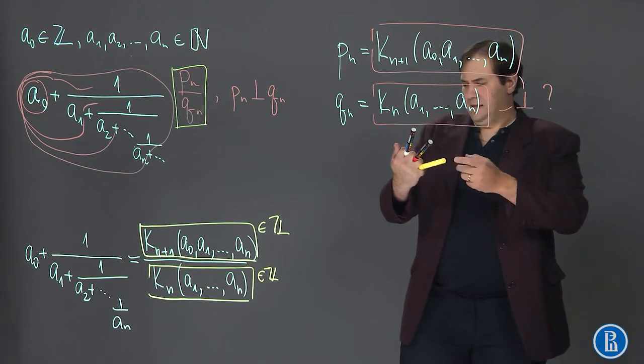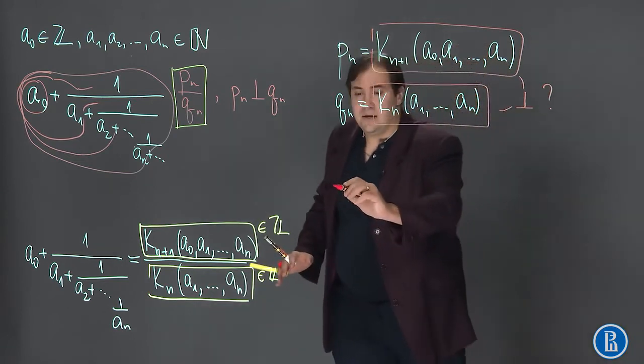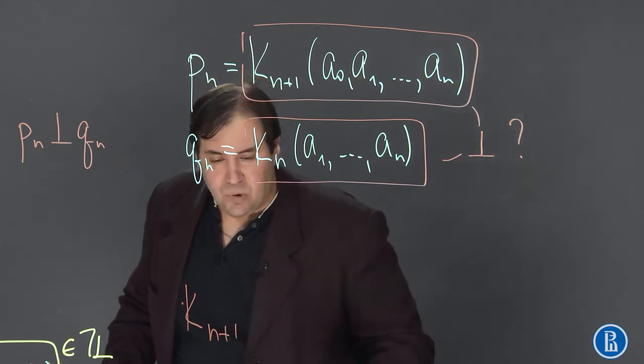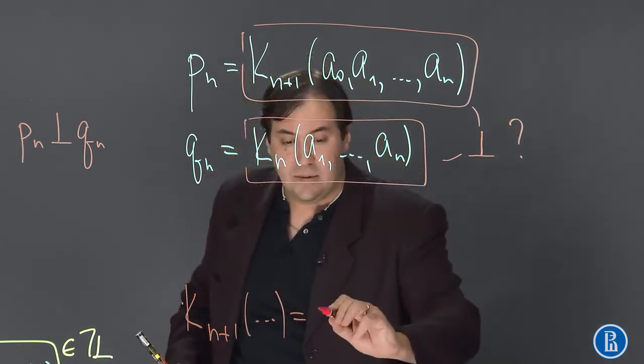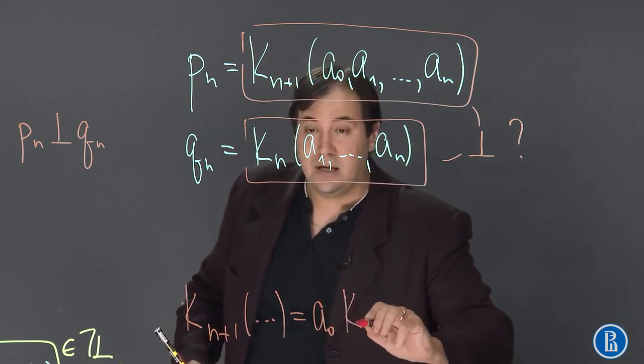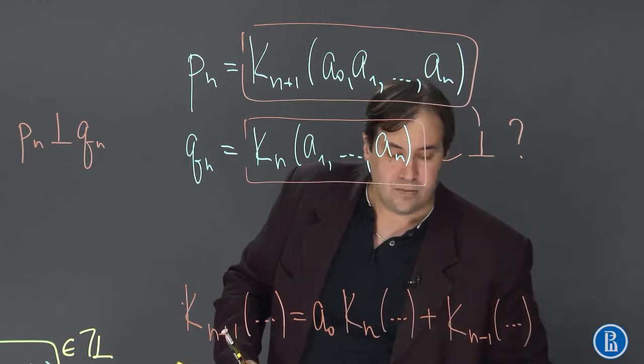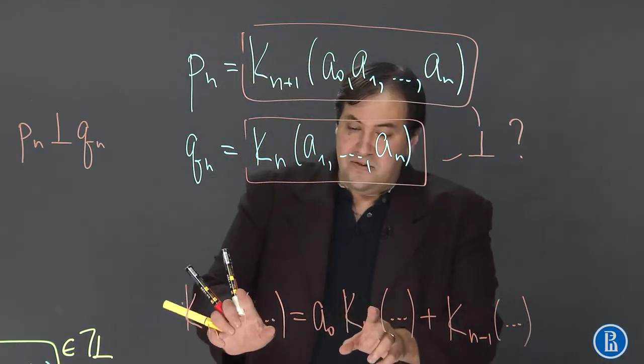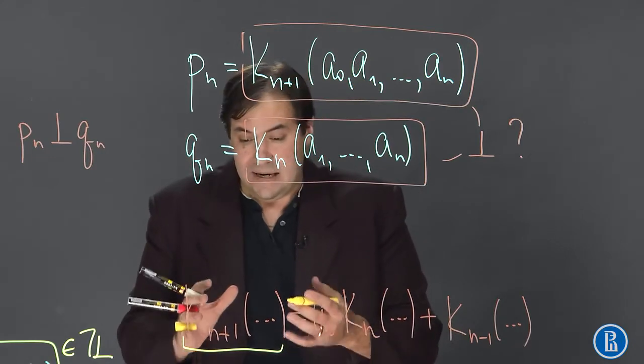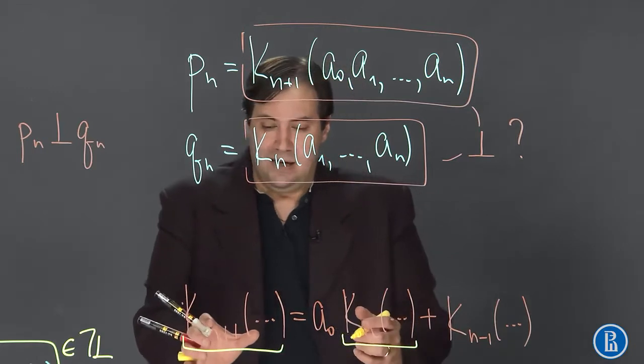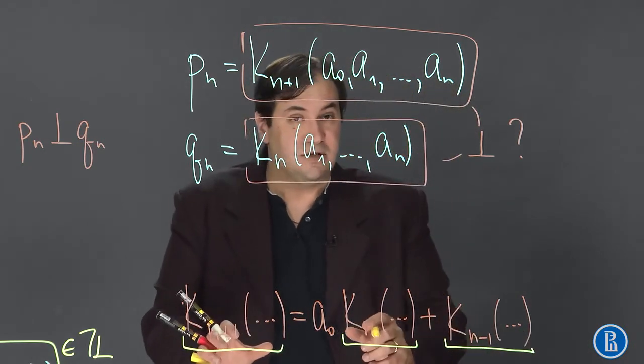In order to prove this, let's recall the Recurrent Equation that connects Continuants, K_{n+1}. If these two Continuants, actually these are already not Continuants but certain numbers, integers, if these two integers have common divisor, then this integer here is also divisible by this common divisor.